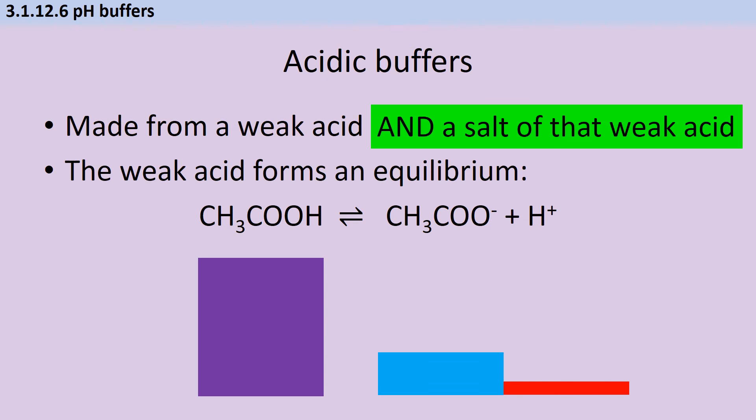The other thing that I could do is I could take my weak acid and I could add a small amount of a strong base like sodium hydroxide, and then that will react with the weak acid to make the salt like sodium ethanoate. Whichever method I choose, I'm adding additional anions which are going to act as a sink for any hydrogen ions that I add to that buffer.